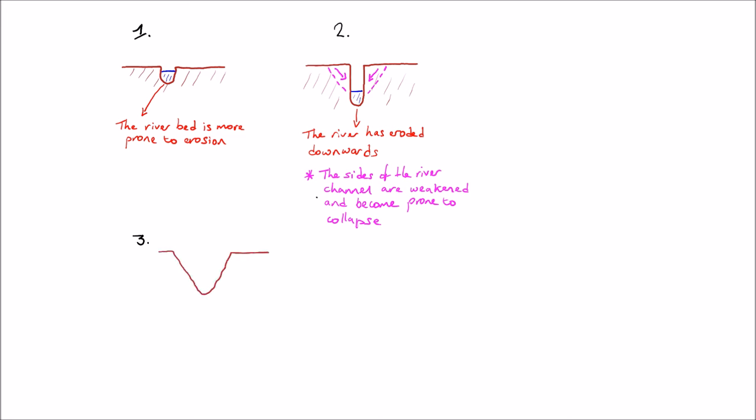In diagram number three, this is the diagram that shows its traditional V-shape and obviously gives it its name as well. The sides have now collapsed and as you can see the river valley is V-shaped.